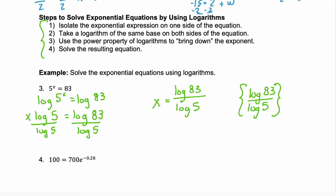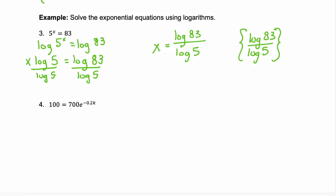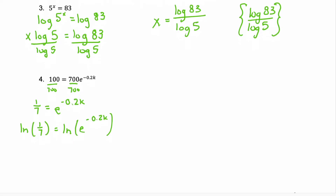Let's look at example 4. Here you see that our exponential expression isn't isolated — it has 700 in front of it. So first we want to divide both sides by that 700. On the left we'll have 1/7, and on the right we have e to the exponent negative 0.2k. Now we'll go to step two where we take the log with the same base of both sides. Here we want to use natural log because we have that irrational number e. So we'll take the natural log of the left, and that equals the natural log of everything on the right. Now remember, when you take the natural log of the base e you are left with just the exponent. So the left side is the natural log of 1/7 and on the right we just have the exponent negative 0.2k.